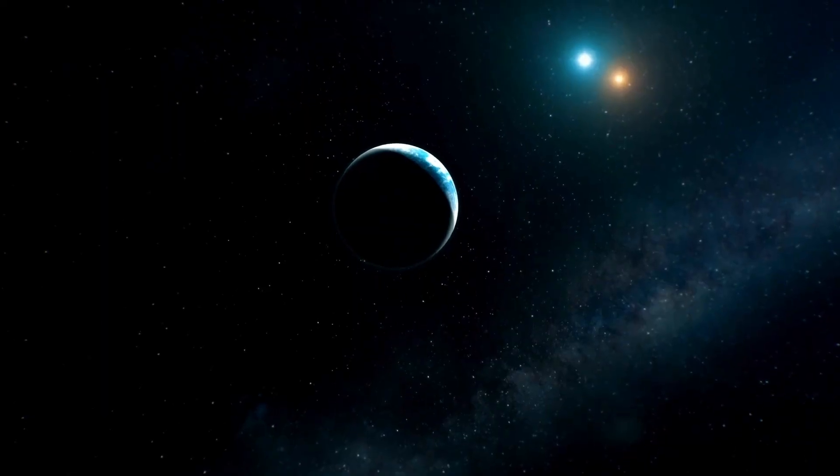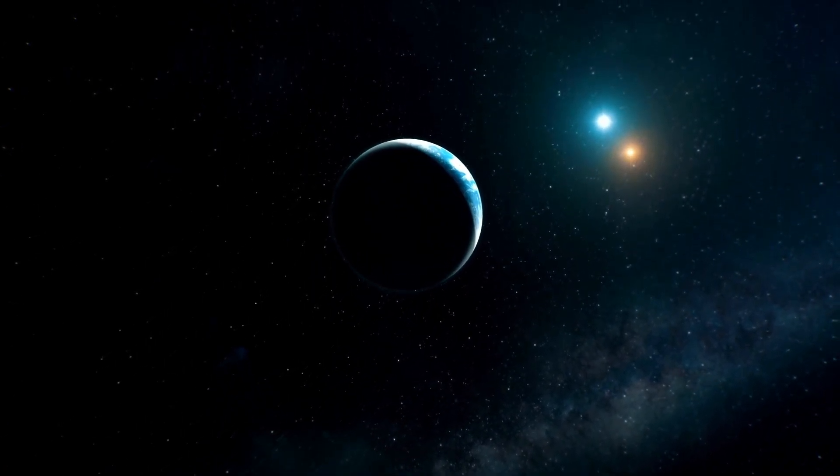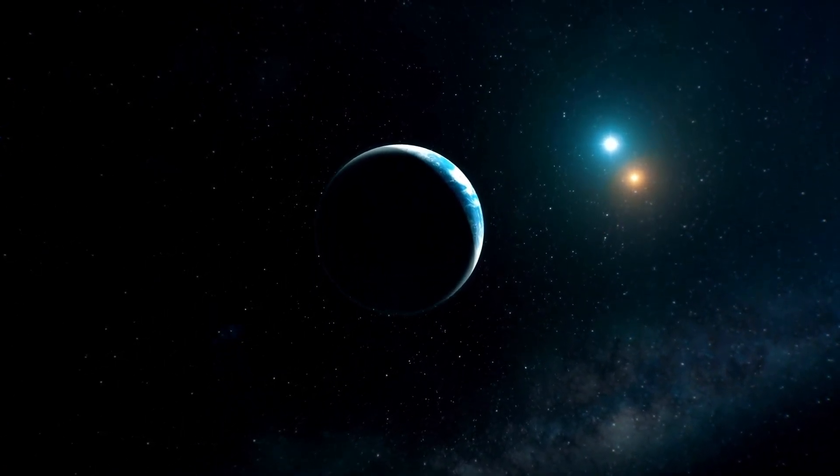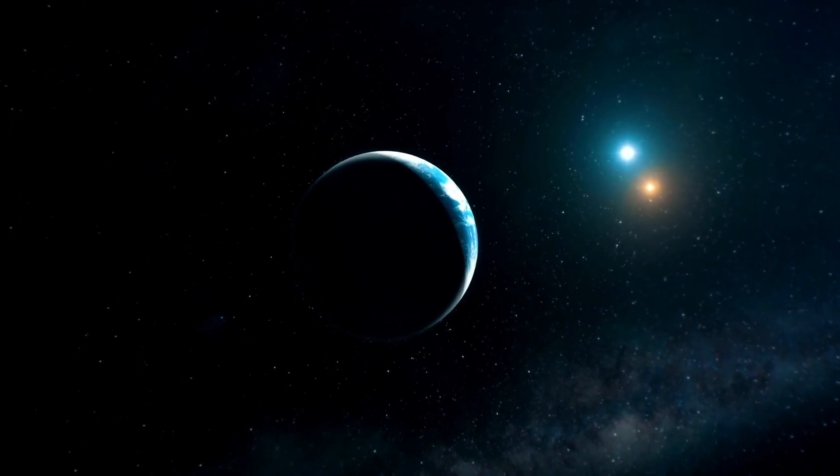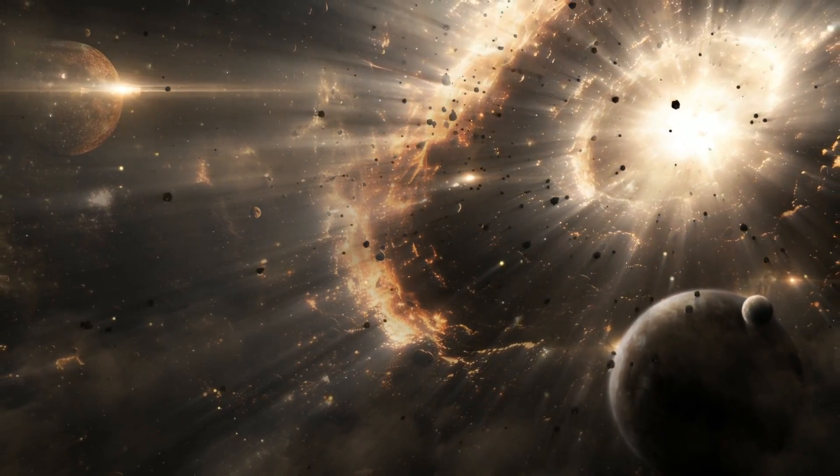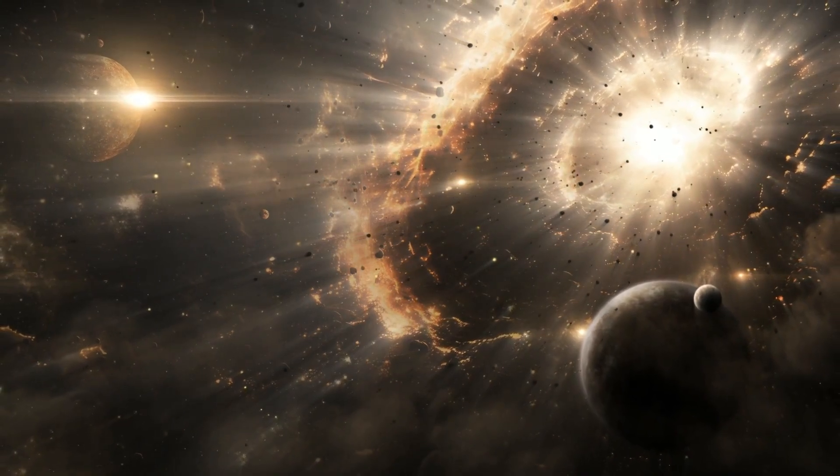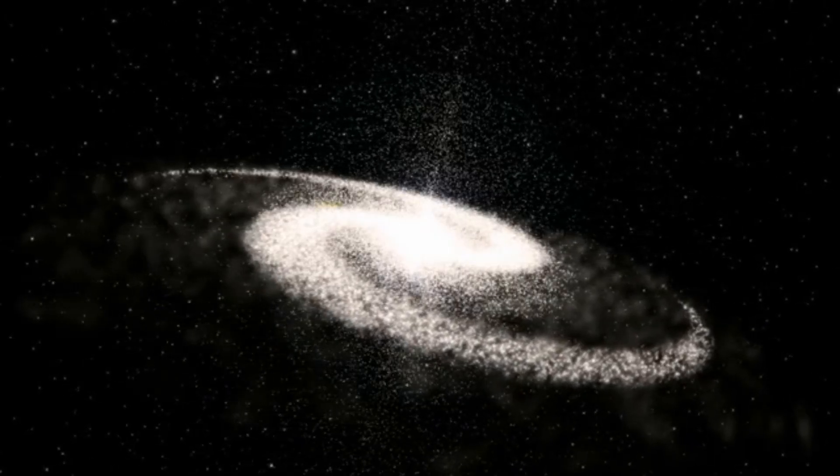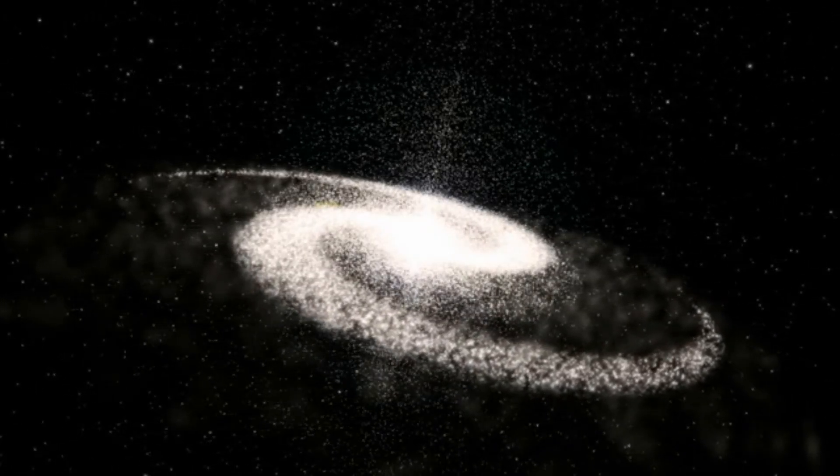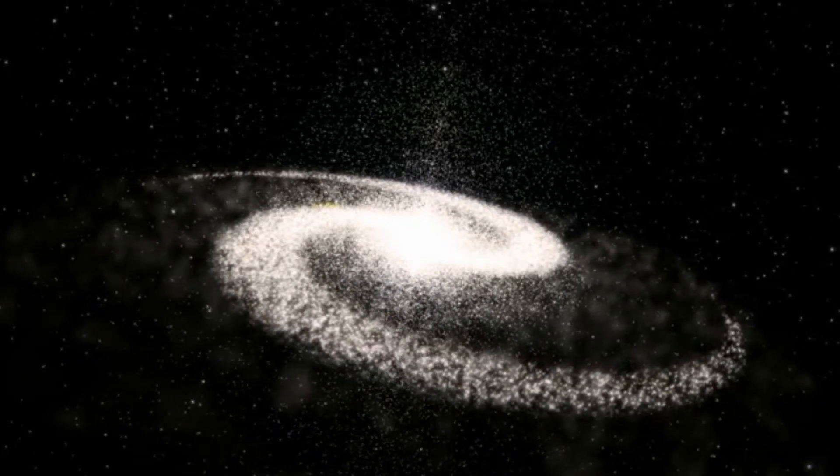Many speculate that Betelgeuse might be approaching the twilight of its life. A supernova event, an astounding burst of energy that can outshine an entire galaxy momentarily, occurs when there is a sudden change in the star's core. Such changes can arise if a star absorbs too much matter from a neighboring star or, in Betelgeuse's case, it could be from the exhaustion of its nuclear fuel which cascades its mass into the core, setting the stage for a cataclysmic collapse.